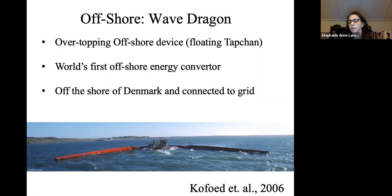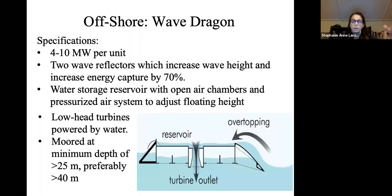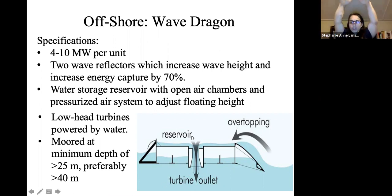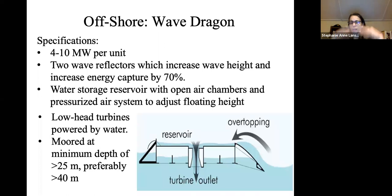The wave dragon is an offshore device that uses a reservoir approach similar to the on-shore overtopping design. It has two wave reflectors that drive water inside and push it up and over into a reservoir, increasing the effective head. The water then flows through a low-head turbine. One of the first was deployed off Denmark in the 1990s, connected to the grid. It includes pressurized air chambers that adjust the floating height depending on wave height. Depth is typically around 40 meters offshore, and the challenge is optimizing overtopping while minimizing force and stress on the moorings and deflectors.